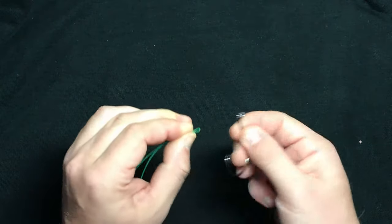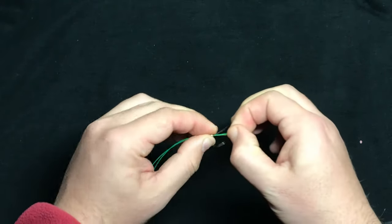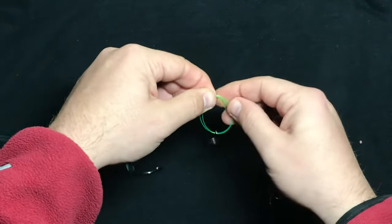So I'm going to pinch the line in half, thread it through the eye, and then I'm going to make an overhand loop like this.